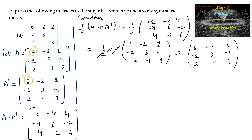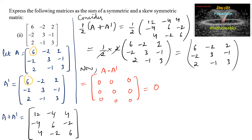Now A minus A transpose: since both matrices are the same, subtracting gives the zero matrix — all elements are 0. Hence 1/2 times of A minus A transpose is also equal to the zero matrix.